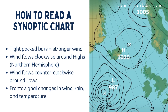Reading a synoptic chart doesn't require a degree in meteorology, just a few key concepts. First, the spacing of isobars tells you how windy it will be — closer lines mean stronger winds. Second, in the Northern Hemisphere, wind flows clockwise around high pressure systems and counterclockwise around lows, so you can estimate wind direction just by looking at pressure systems. Finally, the presence of fronts, especially cold fronts, can signal abrupt changes in wind speed, direction, and rainfall. Watch these closely when timing your route or anchorage decisions.